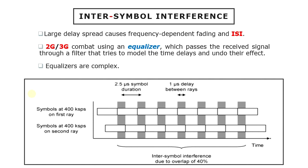Second and third generation of mobile communication systems often combat the two effects using a device known as equalizer, which passes the received signal through a filter that tries to model the time delays and undo their effect. But unfortunately, equalizers are complex devices and are far from perfect. In our next course, we will see how the multiple access techniques of FDMA can deal with these issues in a far more direct way.